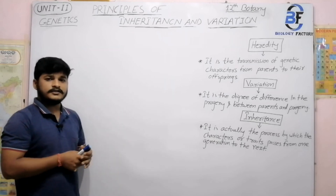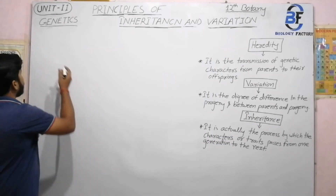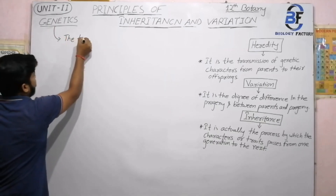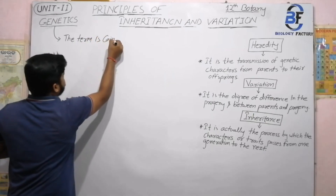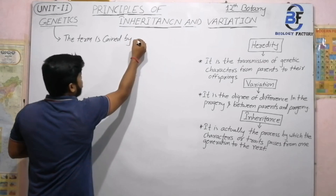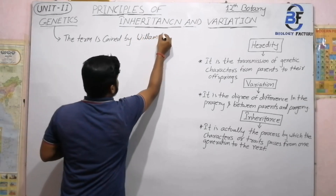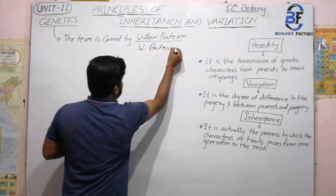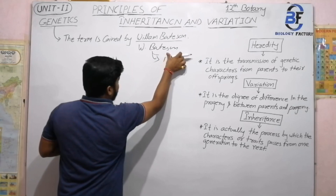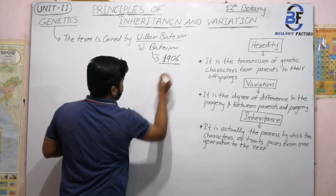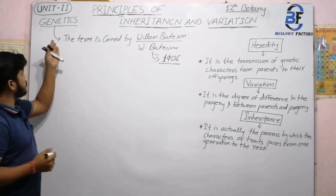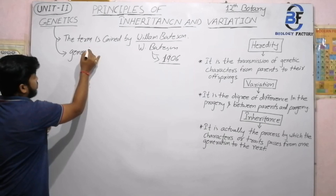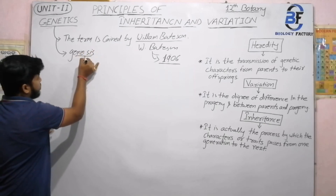Our first topic is genetics. The term 'genetics' was coined by the scientist named William Bateson - also written as W. Bateson in some books - in the year 1906. The term genetics is derived from a Greek word meaning 'Genesis,' and Genesis means 'to become.'